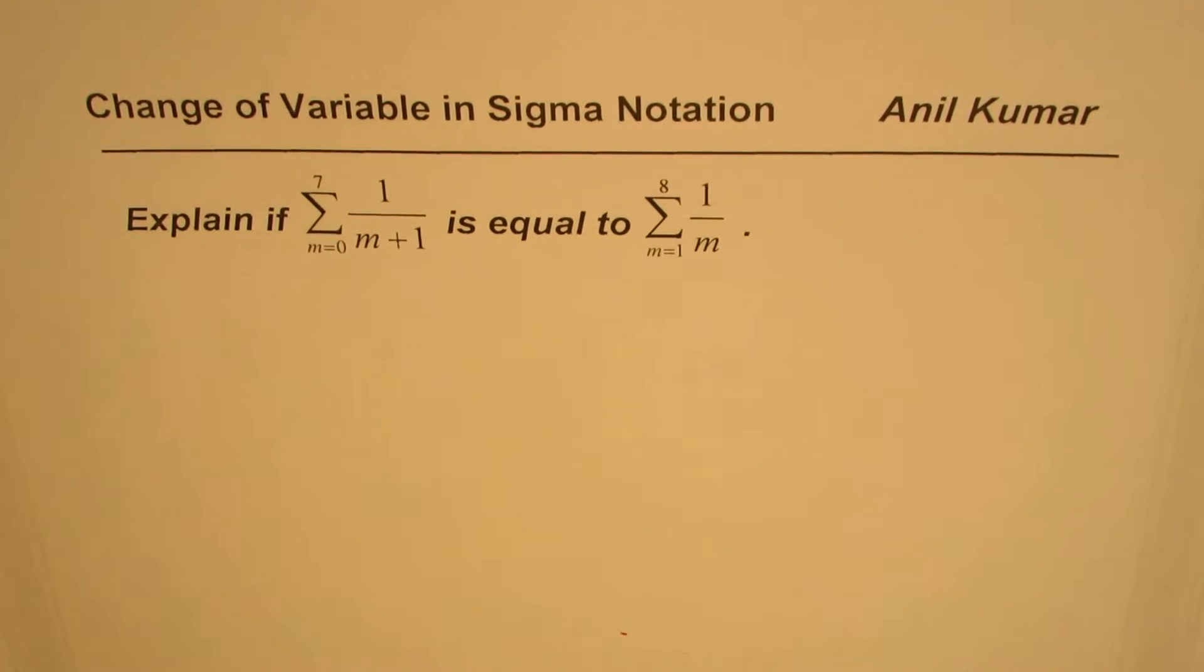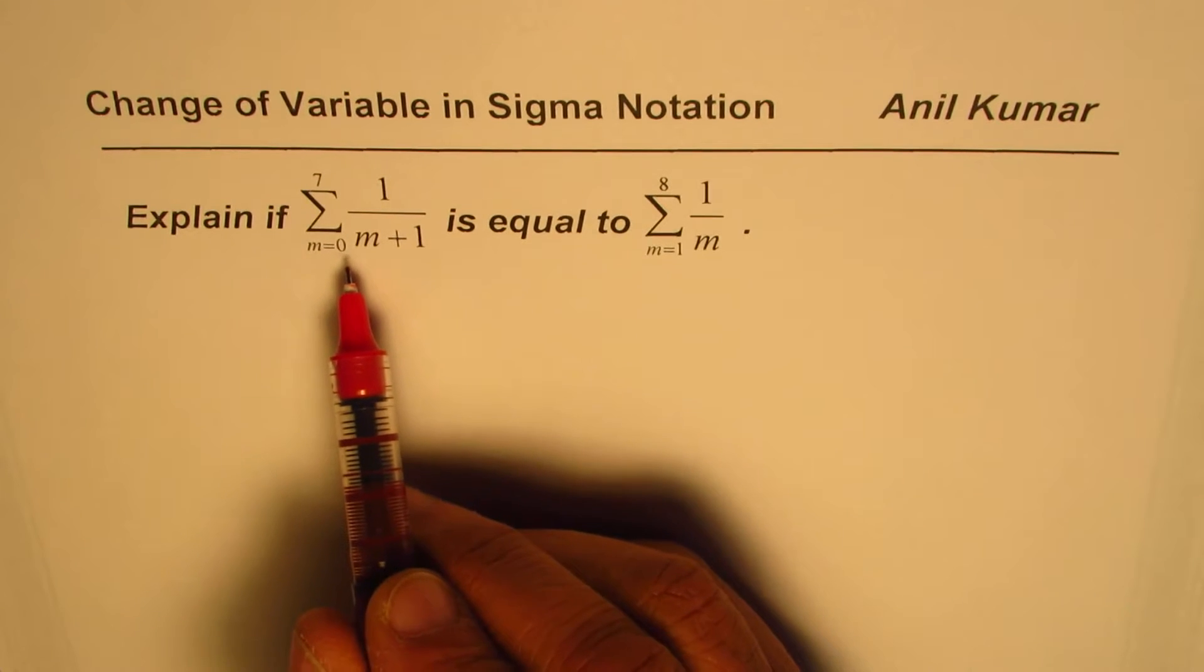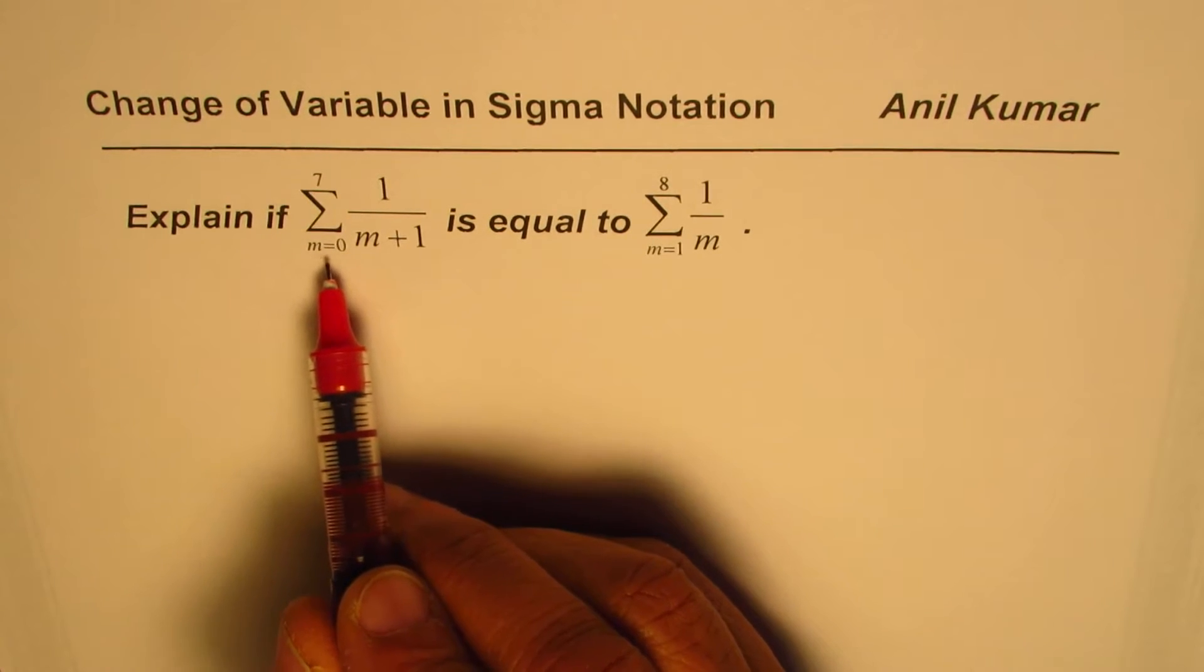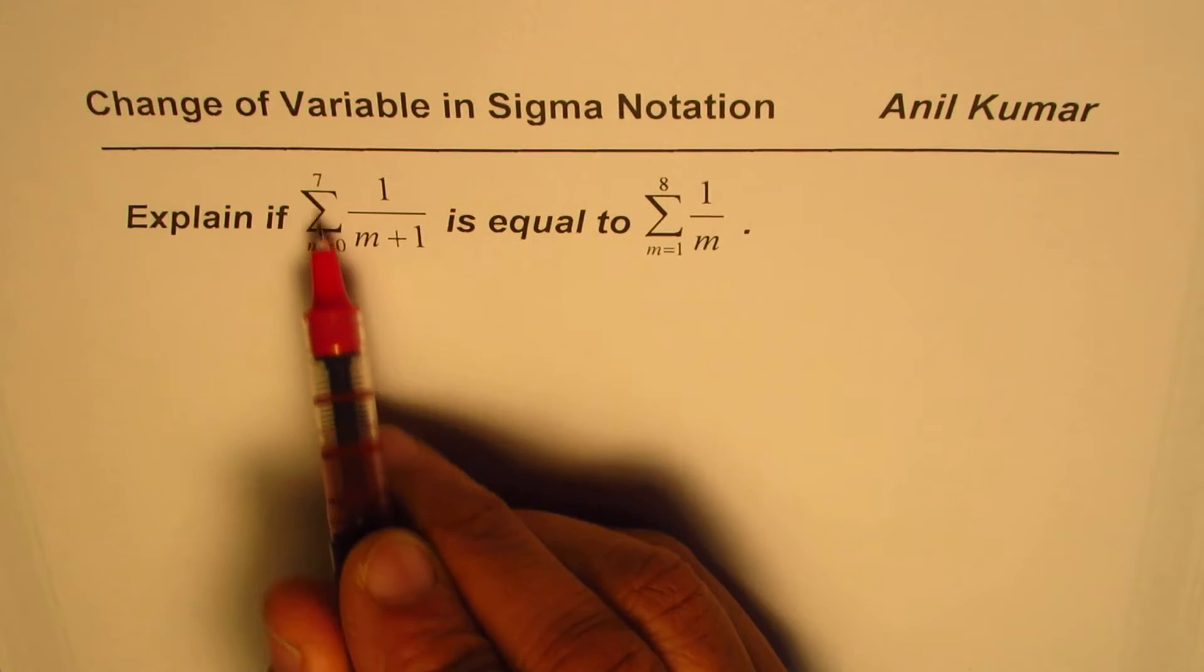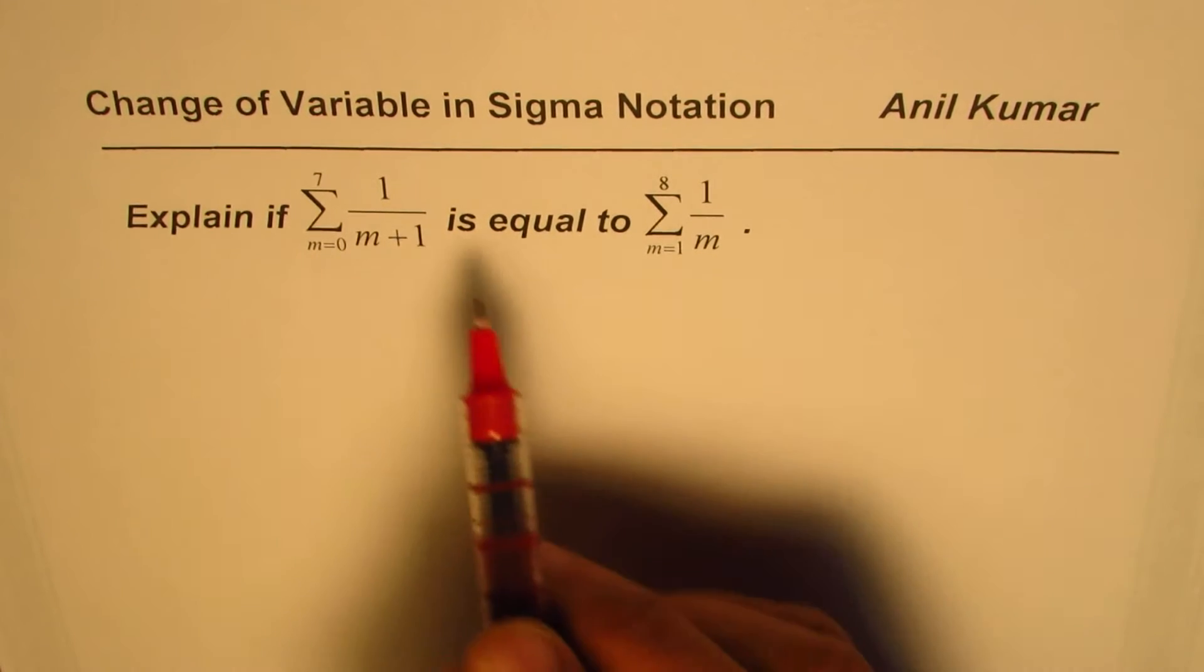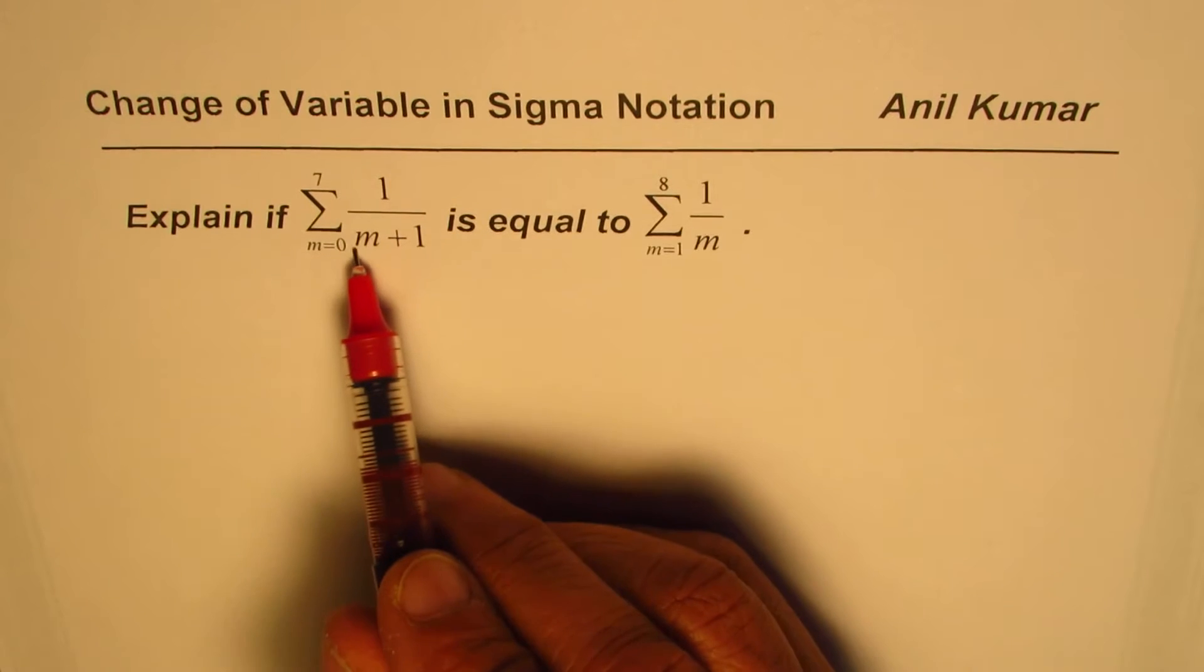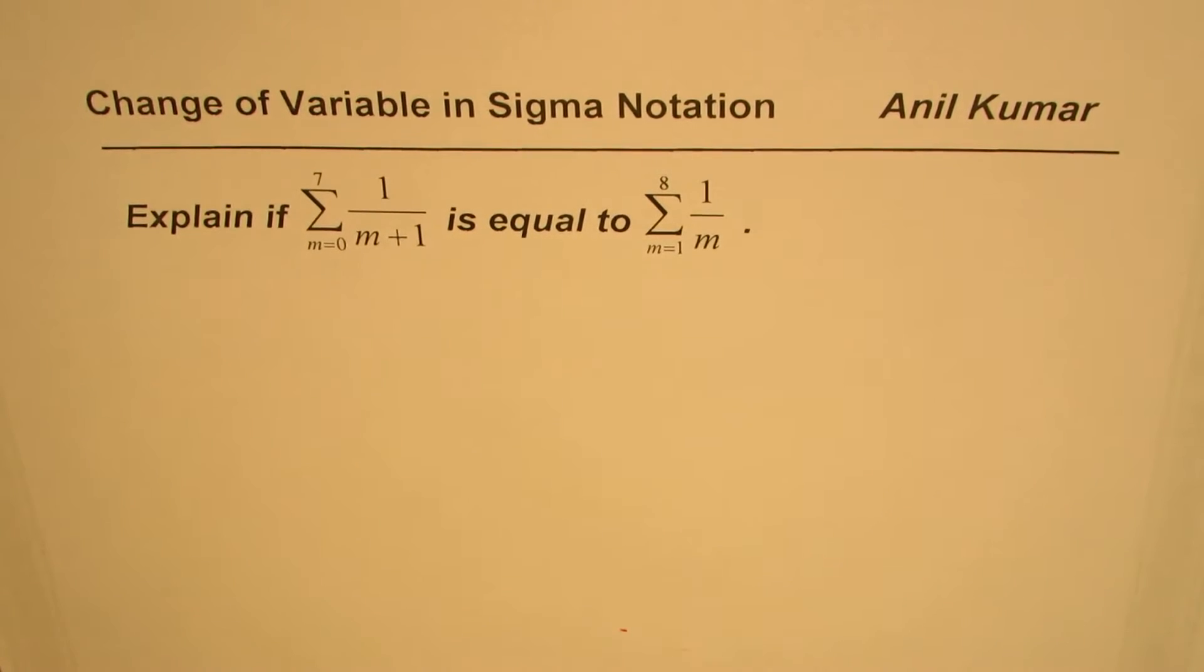In this question we observe two things. One, the lower and upper bounds have changed for summation. Second, the expression has also changed. How to go about in such cases?